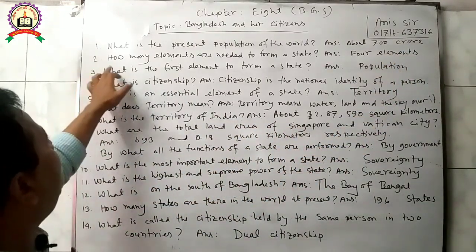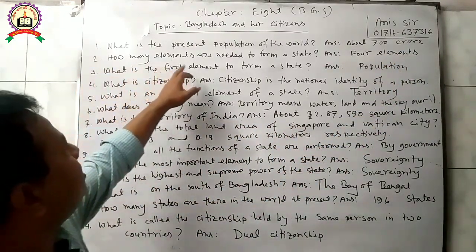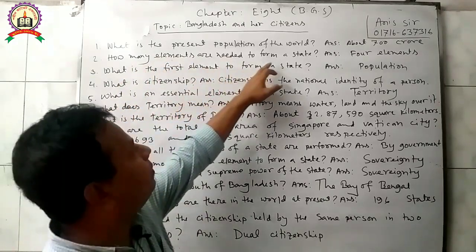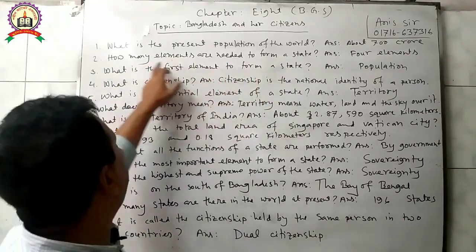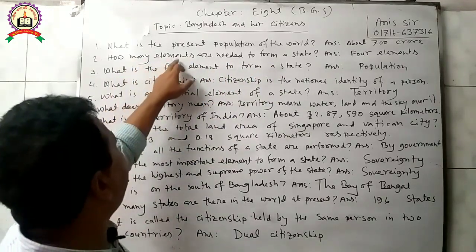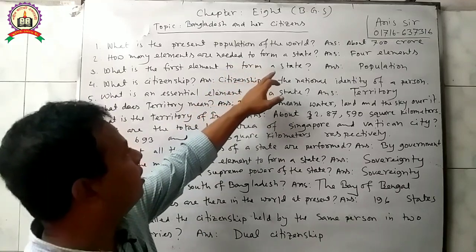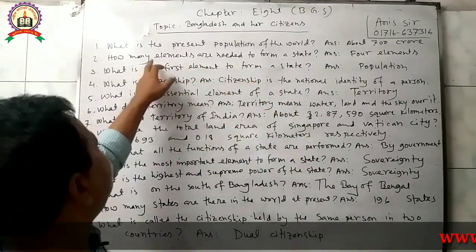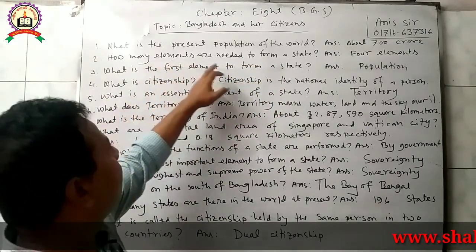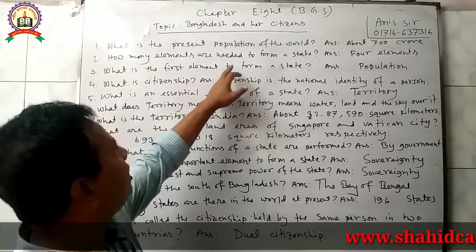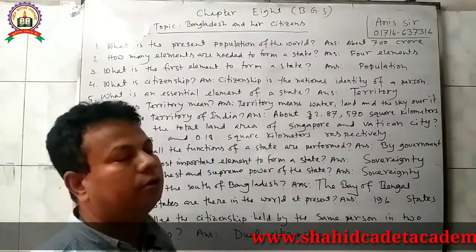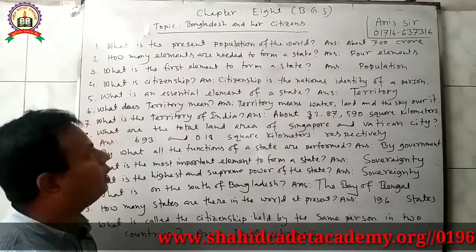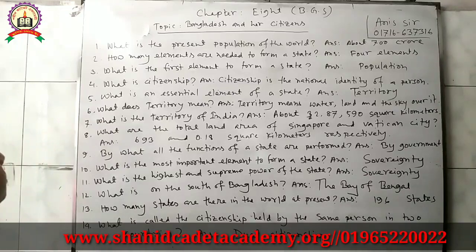Question 2: How many elements are needed to form a state? Answer: Four elements are needed to form a state.